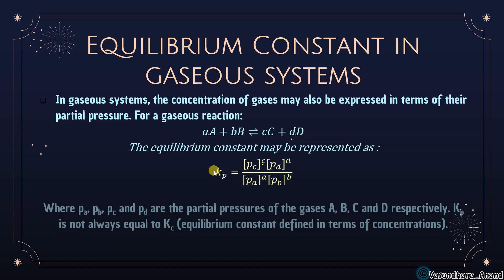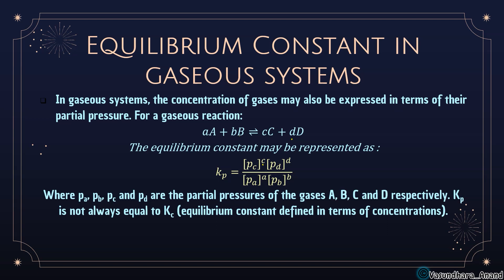For a gaseous reaction aA + bB ⇌ cC + dD, instead of concentration we write partial pressure. So Kp = (Pc^c · Pd^d) / (Pa^a · Pb^b), where Pa, Pb, Pc, Pd are the partial pressures of gases A, B, C, D respectively. Since this Keq is in terms of pressure, it is written as Kp. Kp and Kc are not necessarily equal — there is a specific relation between them which we will prove.